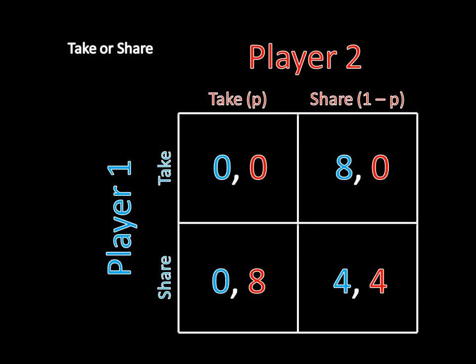Imagine that player two is mixing between take and share — playing take with probability P and share with probability one minus P — and this is actual mixing, not P equal to one or zero. The question is: can player one play the weakly dominated strategy? The answer is no. If player one plays take, his expected utility is P times zero plus eight times one minus P, which equals eight times one minus P.